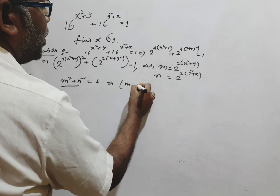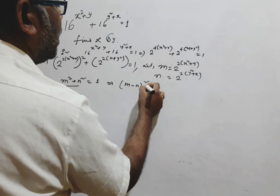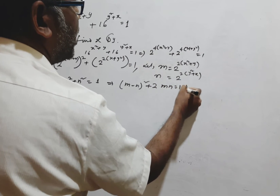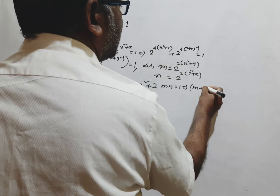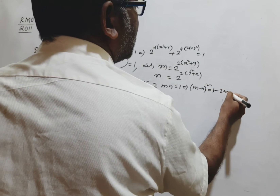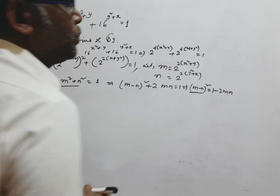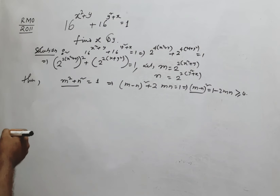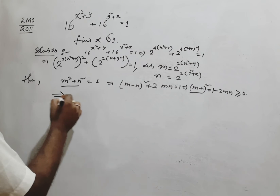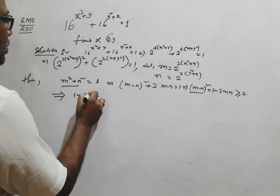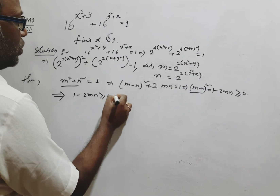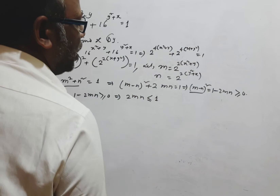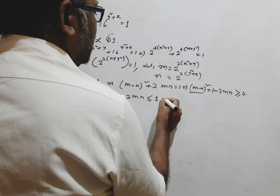Then m² + n² = 1. This can be written as (m − n)² + 2mn = 1. Since (m − n)² ≥ 0, we get 1 − 2mn ≥ 0, which implies 2mn ≤ 1.